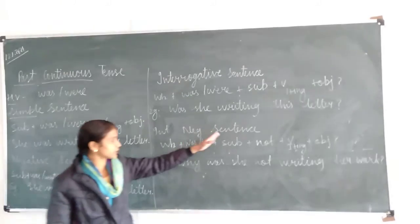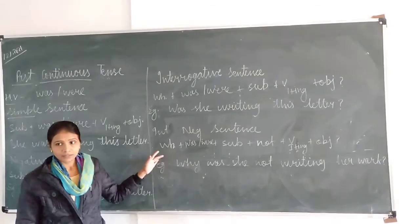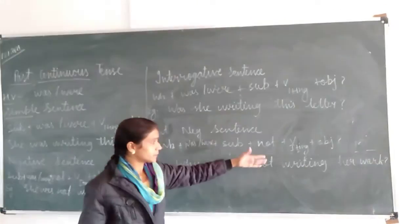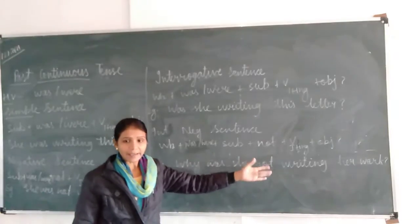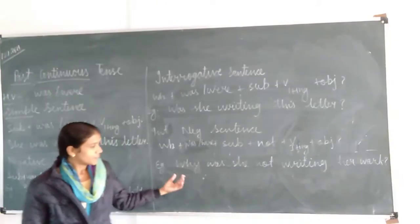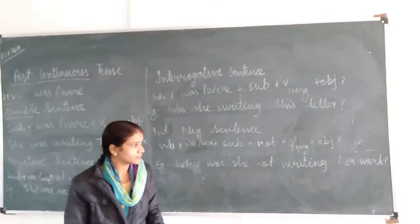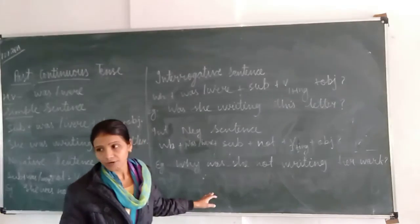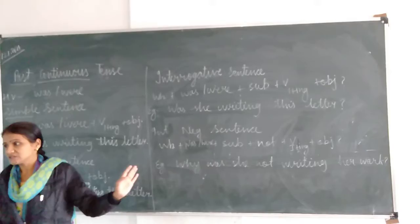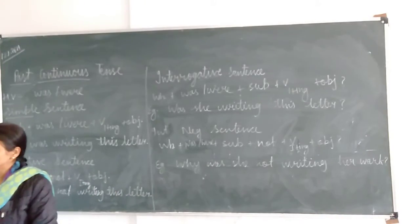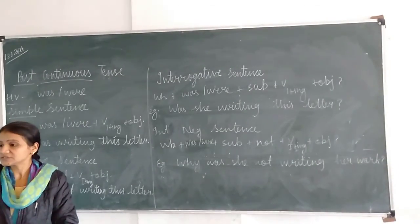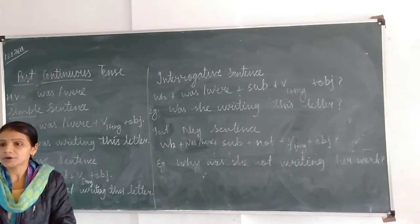Then the interrogative negative sentence. Structure: WH word, then was/were, then subject, then not, verb ing form and object. Example: Why was she not writing this letter? So with this, past continuous tense is already completed. You have to write multiple examples in your grammar notebook.